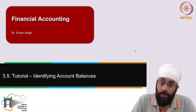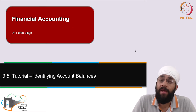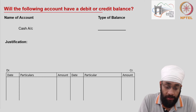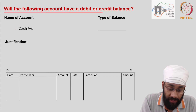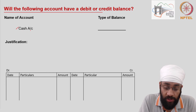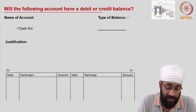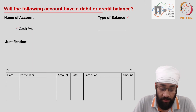Hi, this is a tutorial. In this video we are going to look at a list of account names and then try to justify why those accounts will always have a debit balance or a credit balance. The format of the slide is arranged as follows: we have an account of interest, so cash account. We do our working notes in the open area on the slide, and I have an account format on the slide to illustrate the ideas. So let us get started.